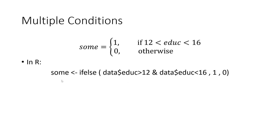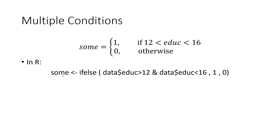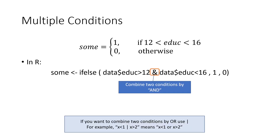The structure is basically the same. We define the variable name 'some' using the ifelse command, which requires three arguments — one and zero for true or false. We include two conditions connected by AND. This AND command is intuitive — two conditions are combined by AND, meaning both must be satisfied at the same time.